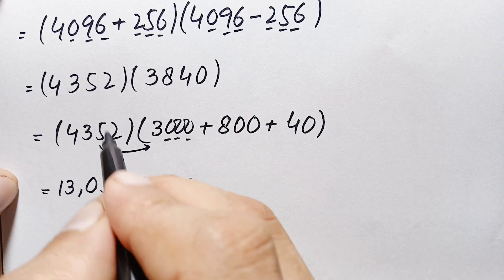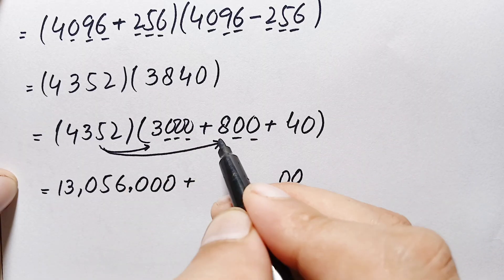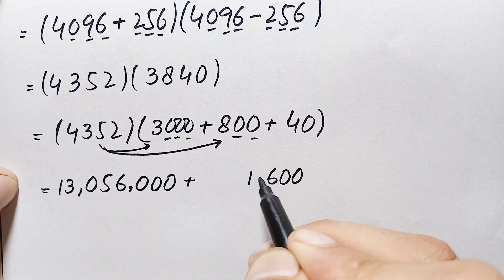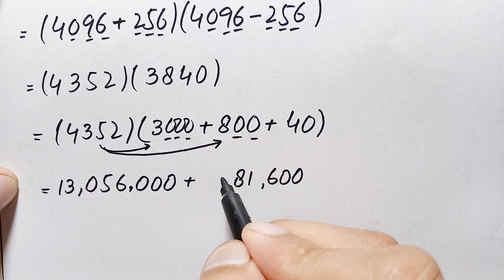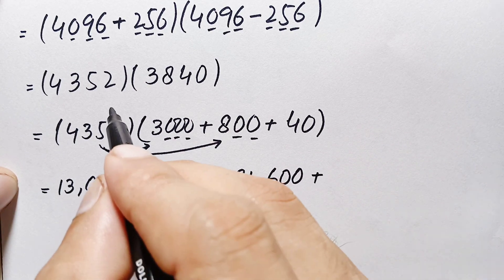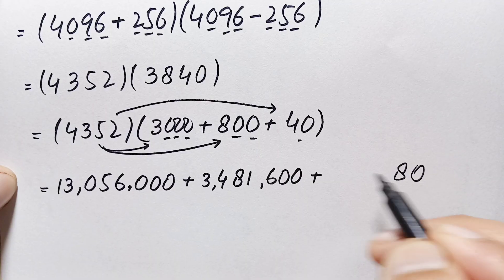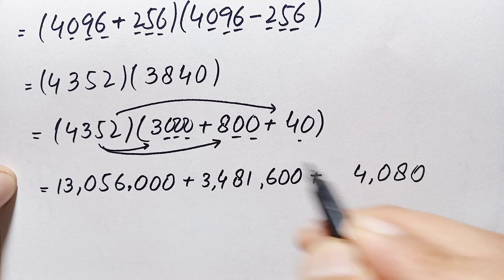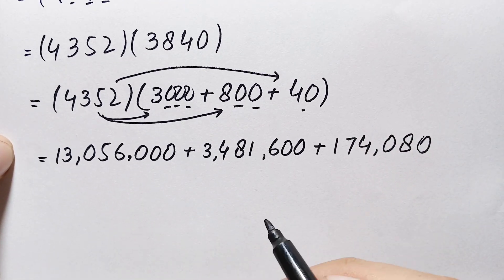Now multiplying 4352 by 800: 4352 times 0 is 0; 4352 times 8 — 8 times 2 is 16, carry 1; 8 times 5 is 40 plus 1 is 41, carry 4; 8 times 3 is 24 plus 4 is 28, carry 2; 8 times 4 is 32 plus 2 is 34. This gives 3,481,600. Then multiplying 4352 by 40: 4352 times 0 is 0; 4 times 2 is 8; 4 times 5 is 20, carry 2; 4 times 3 is 12 plus 2 is 14, carry 1; 4 times 4 is 16 plus 1 is 17. This gives 174,080.